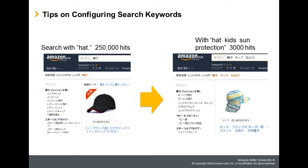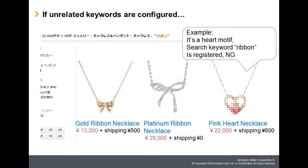It is important to configure search keywords that correspond to the product's objectives and features. Keywords registered that have nothing to do with the product become noise for the search results that interrupt buyers when searching. For example, if the keyword 'ribbon' is registered for a heart necklace, it will be included in the search results, creating difficulty for the customer. Only input corresponding keywords that are related to the product.